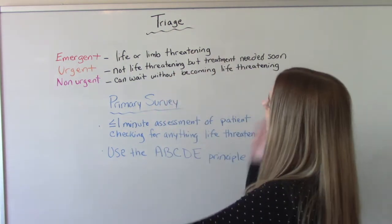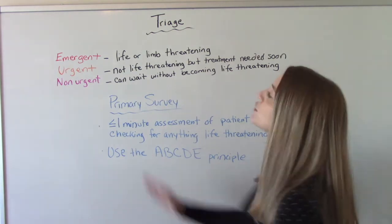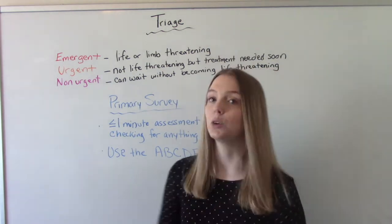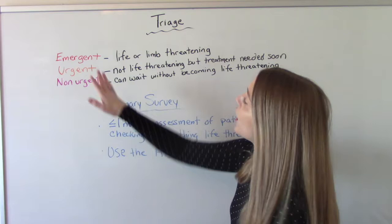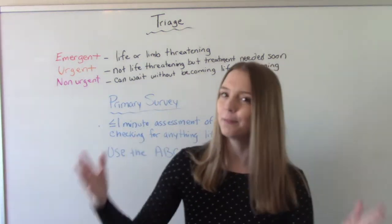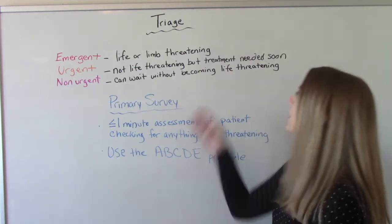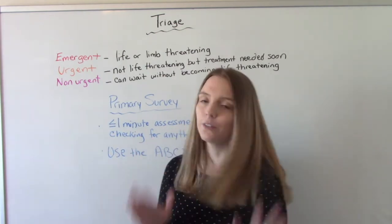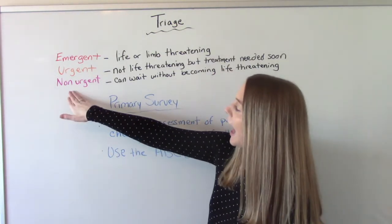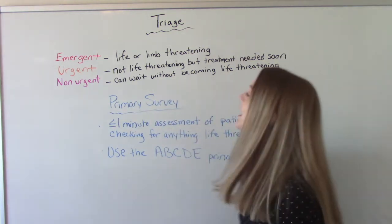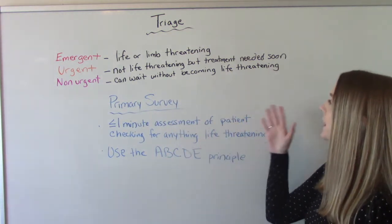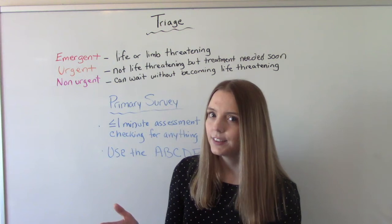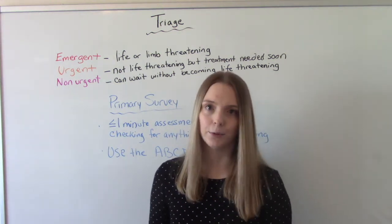The first thing we need to talk about are the three levels of triage. Emergent is life or limb threatening — if you don't do anything, the patient will die or lose a limb. Urgent is not necessarily life or limb threatening, so it's not as serious, but treatment is needed very soon because it could potentially become emergent. And then finally, non-urgent is where treatment can wait without becoming life-threatening, so the patient can wait in the emergency room without deteriorating or becoming unstable quickly.